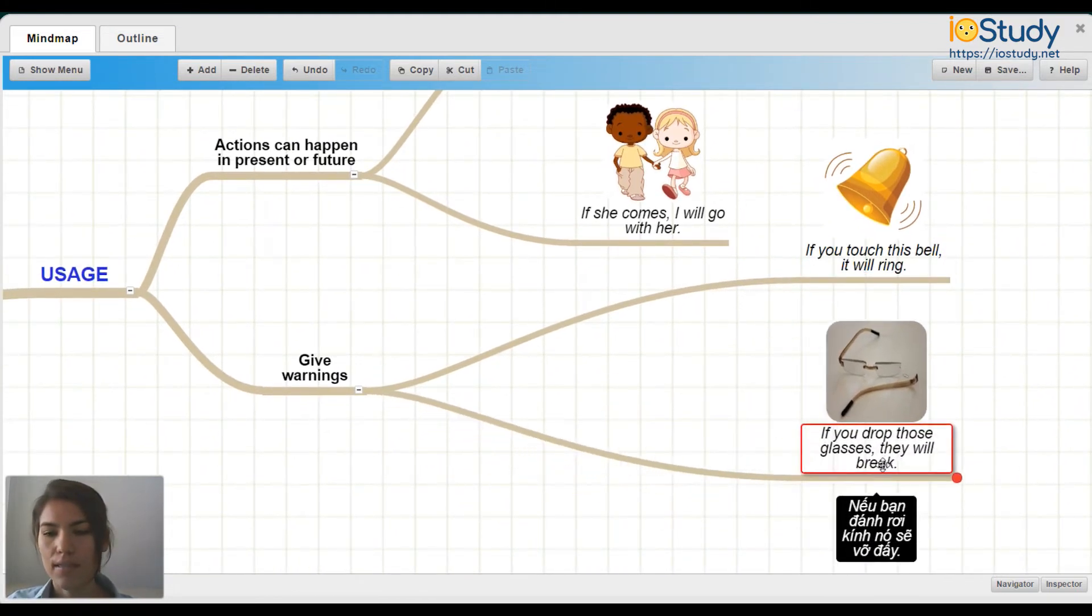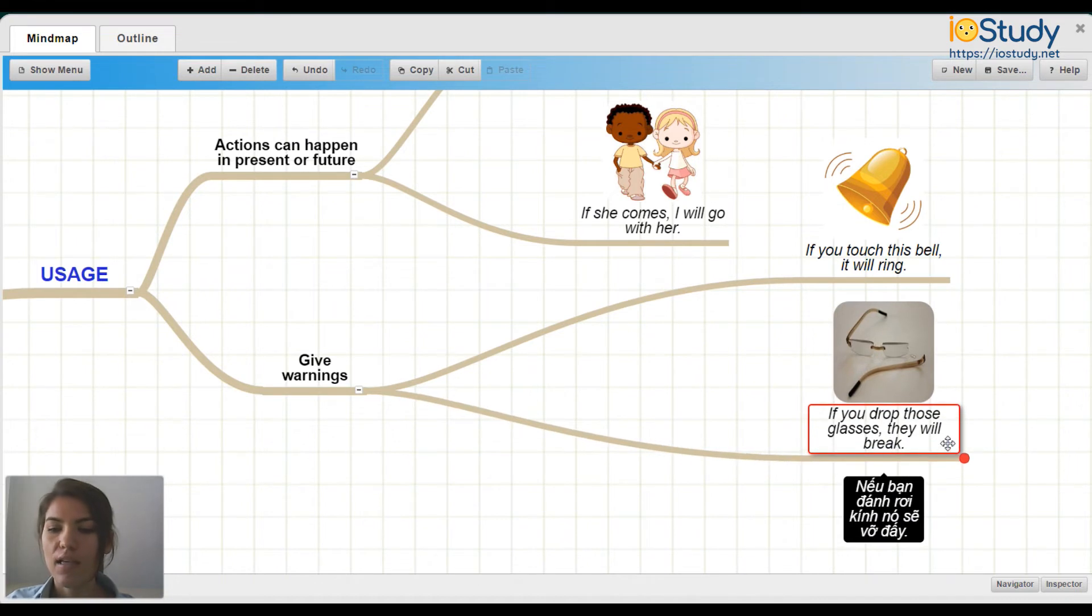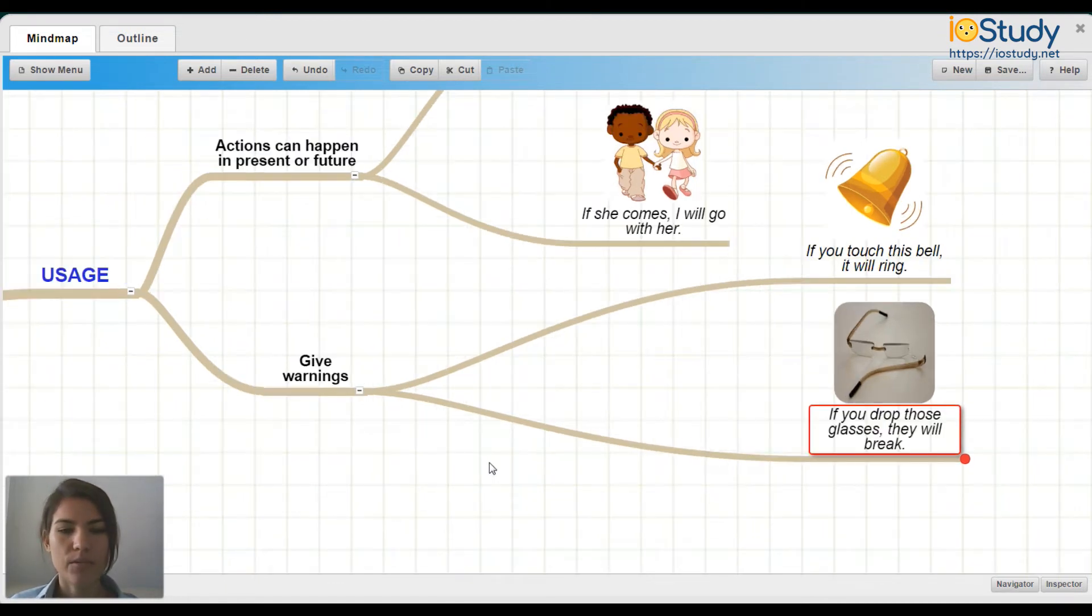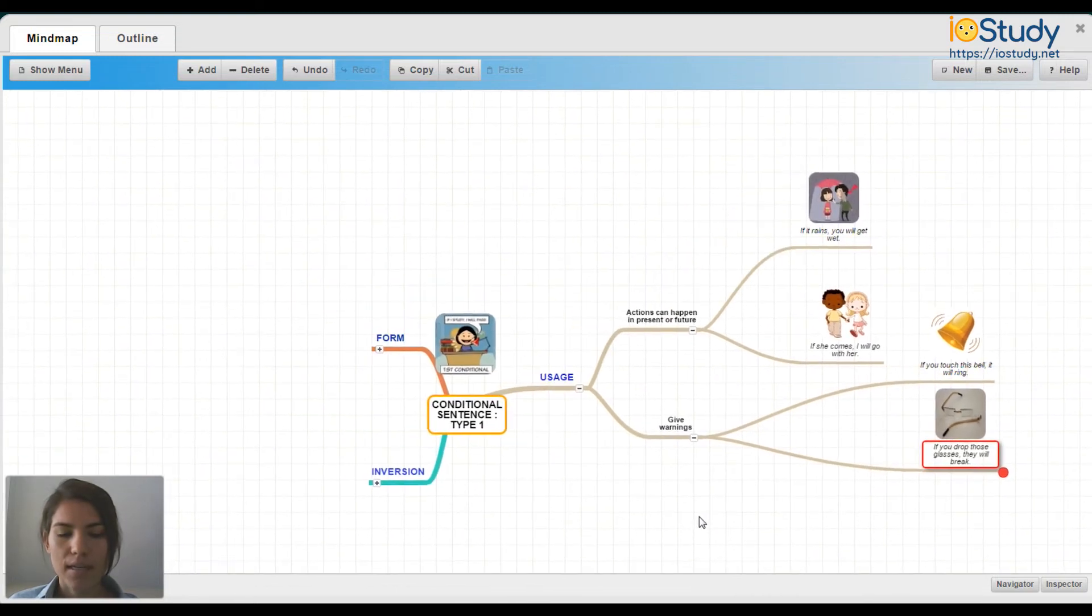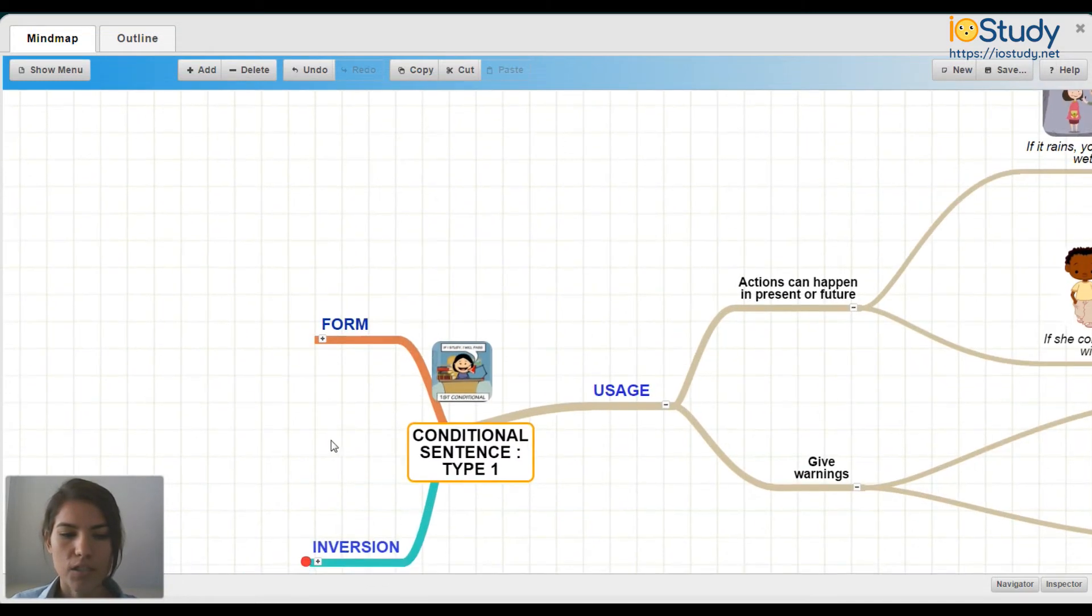Next. If you drop those glasses, they will break. Again, another warning. So there you go. Those are some examples of sentences and how to use the conditional.